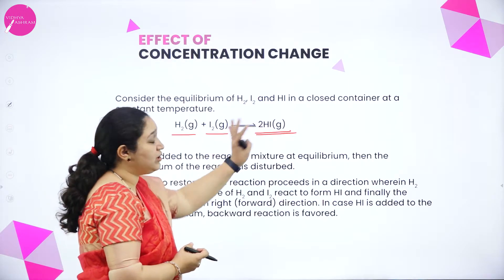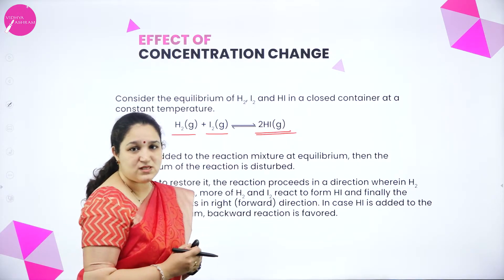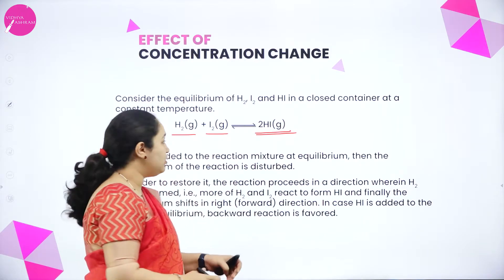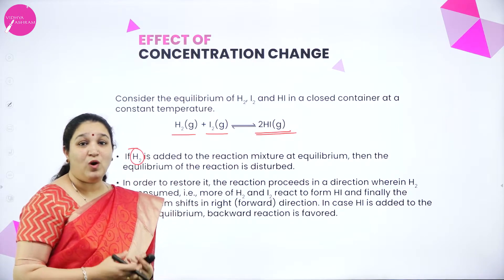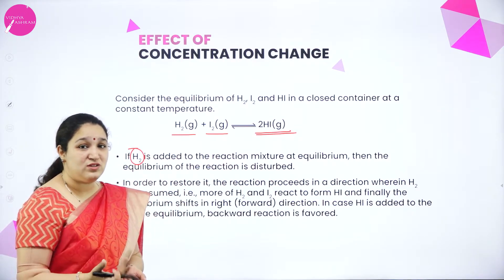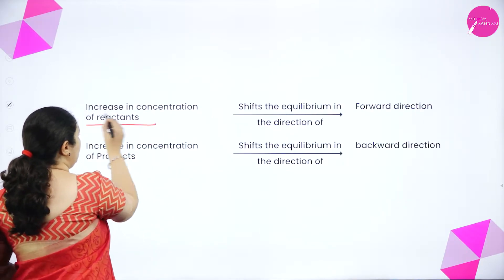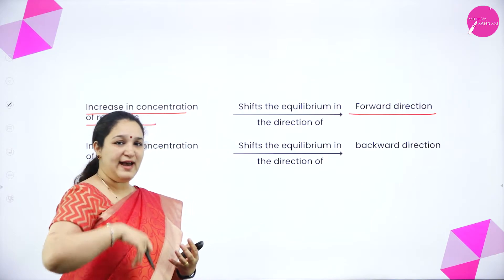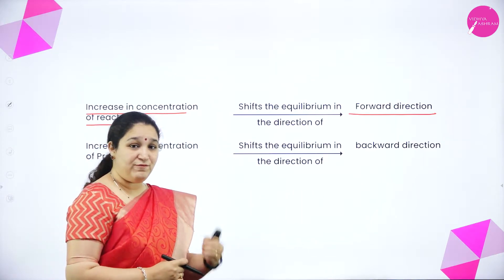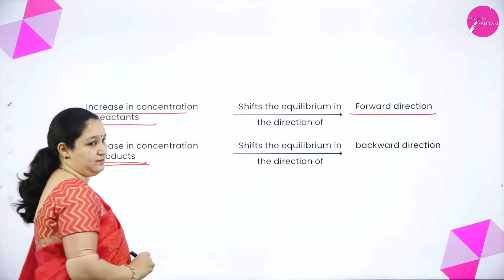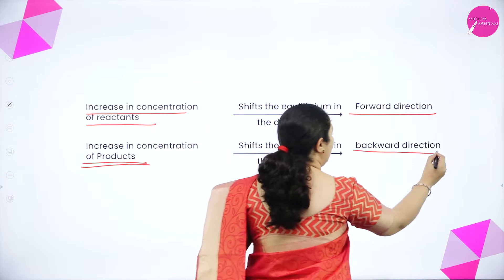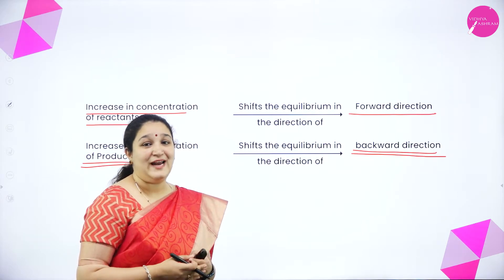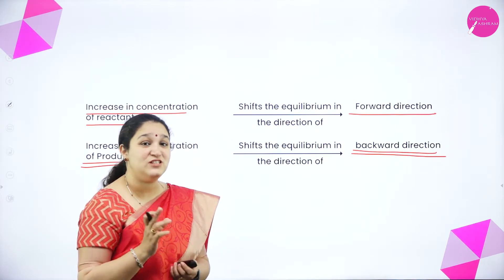For example, if I add hydrogen iodide, again the equilibrium will be disturbed. But the extra HI added will be immediately decomposed to give hydrogen and iodine. So when concentration is changed: if I increase the concentration of the reactants, equilibrium shifts in the direction of the forward reaction. If I add more products — increase the concentration of products — then the backward reaction is favored. This is how it nullifies the effect of change in concentration.